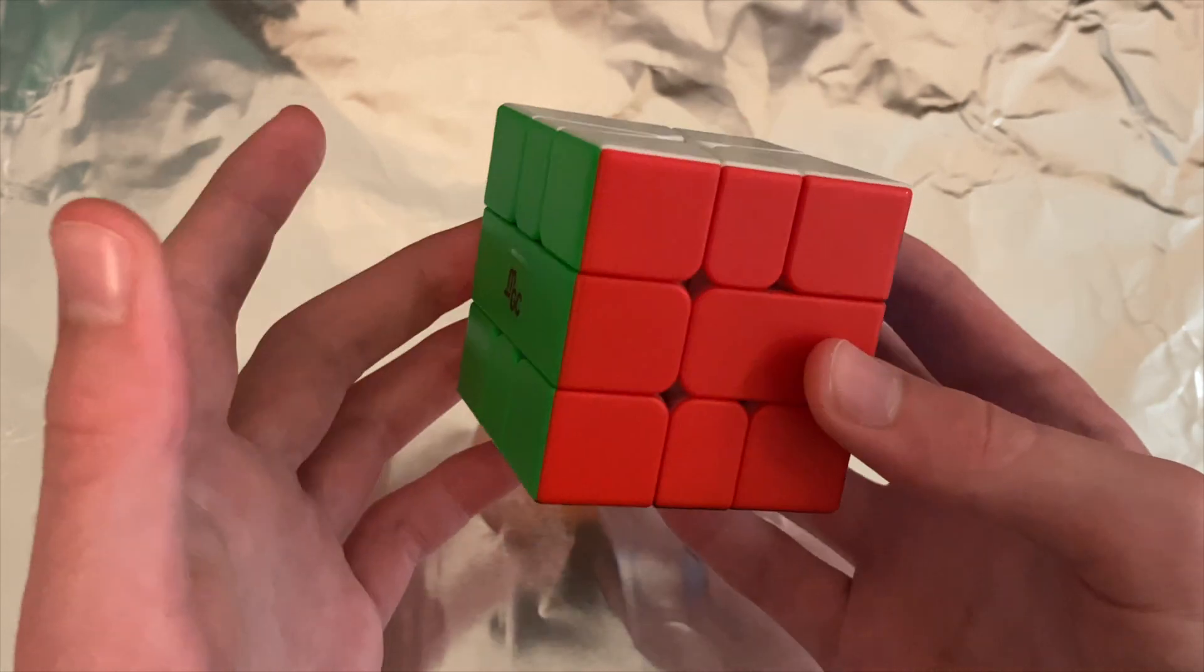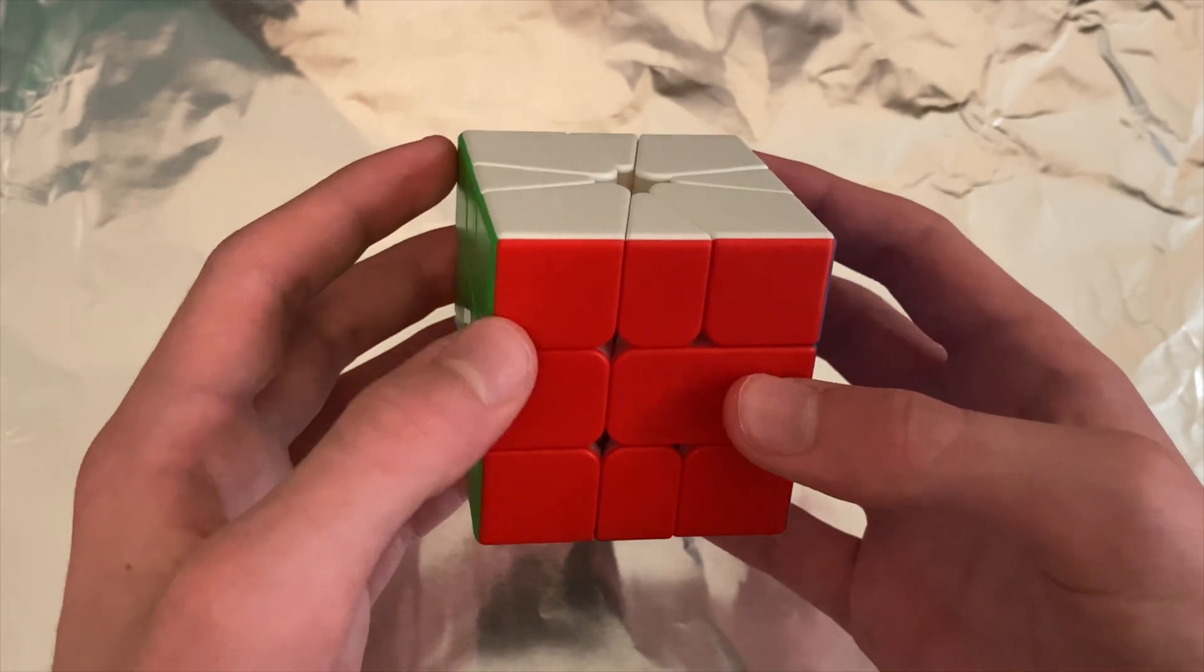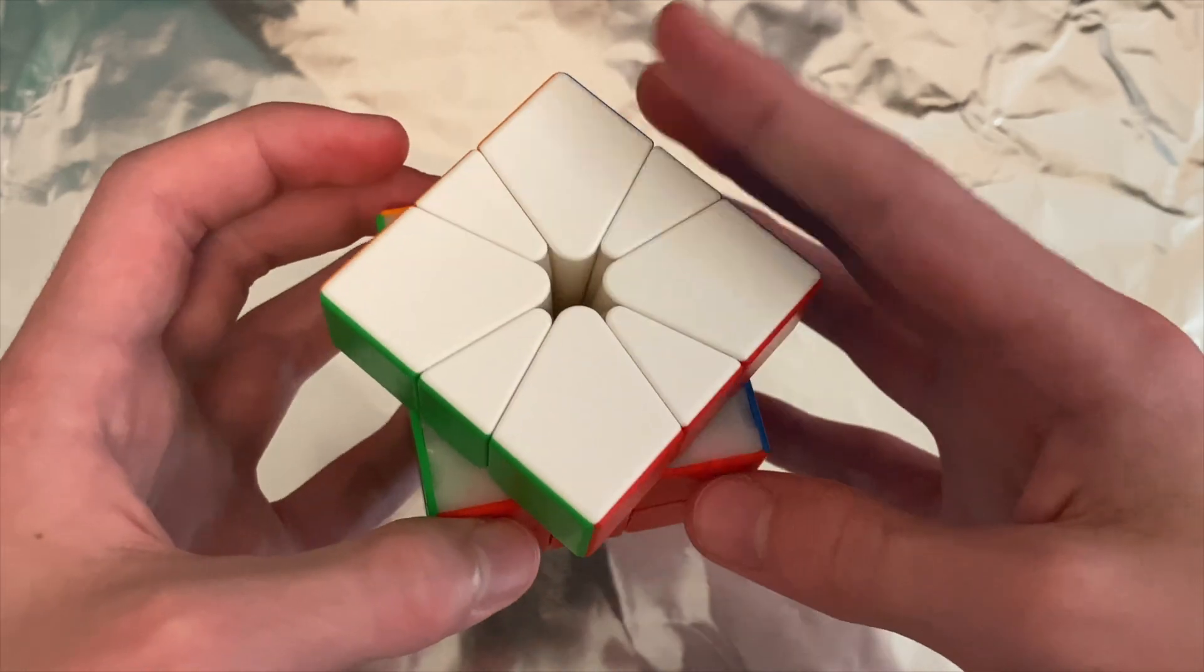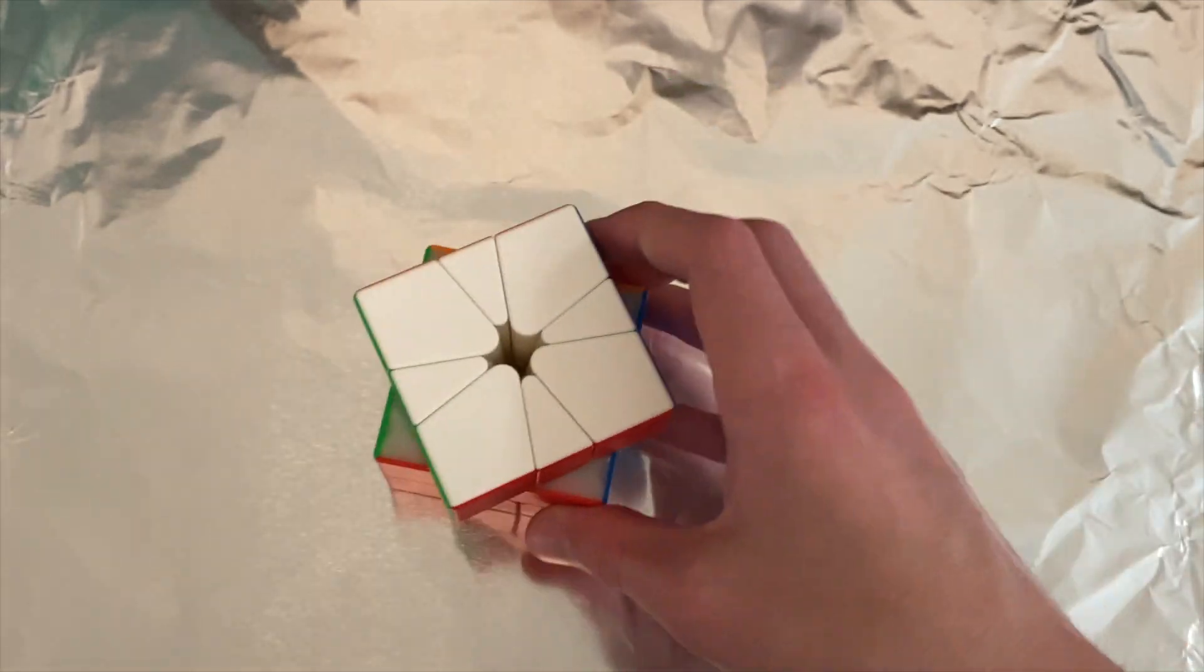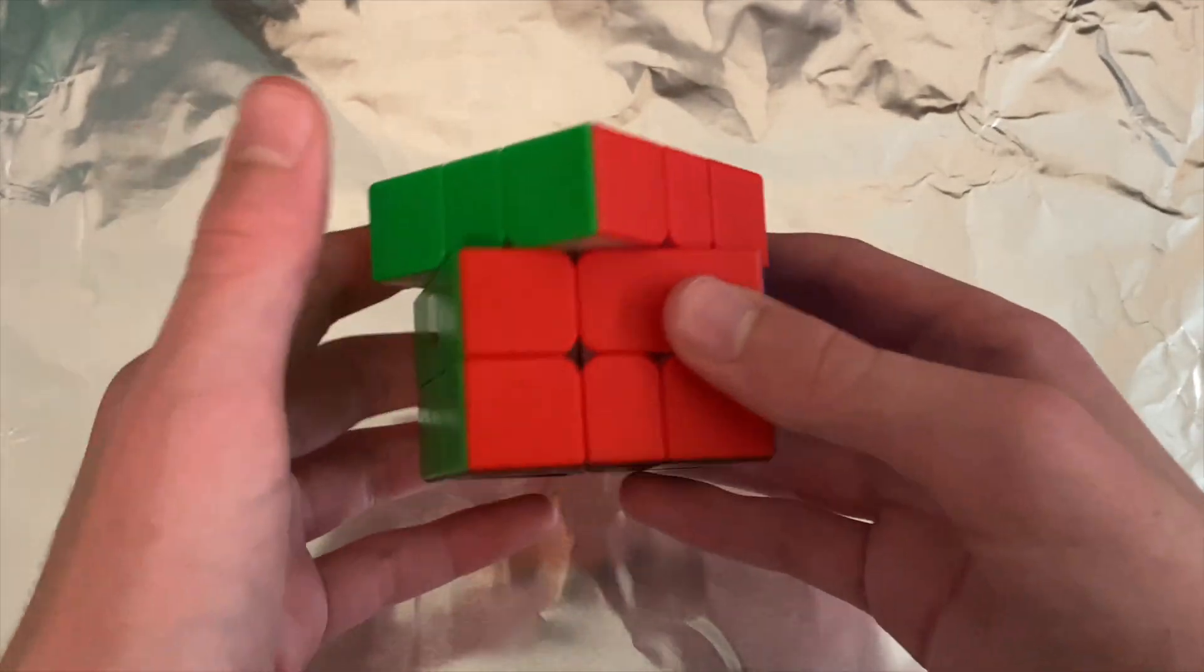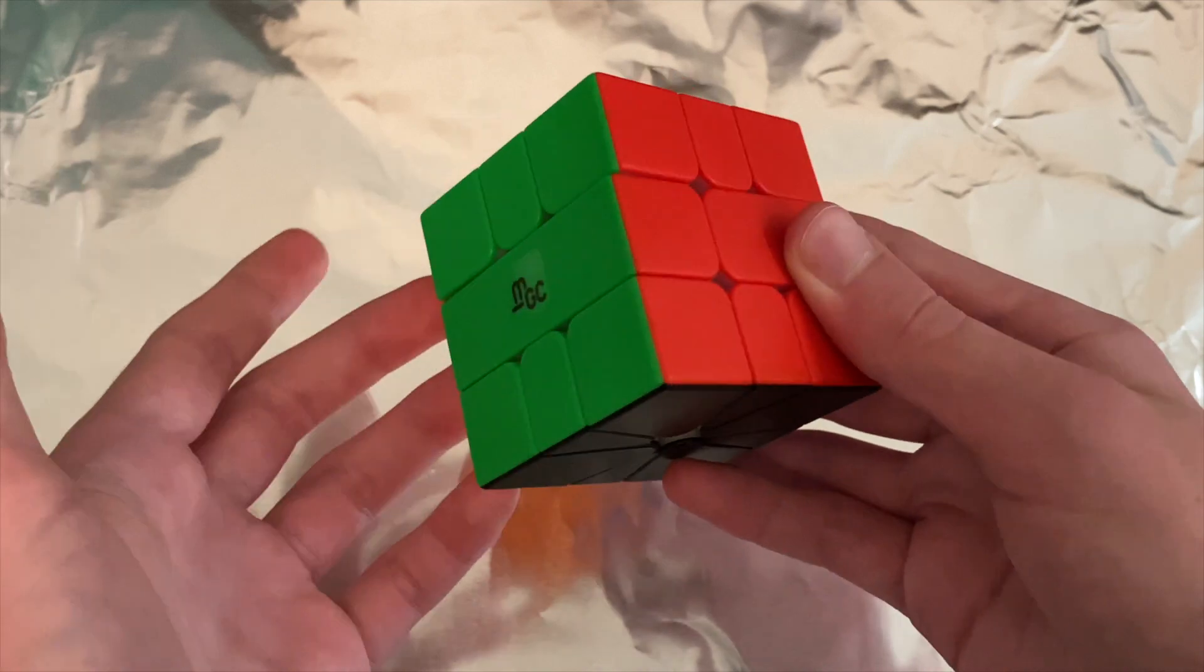This is the MGC Square One, and in my opinion the magnets on the UD layers are too light and there just aren't enough of them. When you misalign it to where you can't do a slice, normally on a Volt V2 there would be a magnetic attraction there, but here there isn't, which I find really annoying.